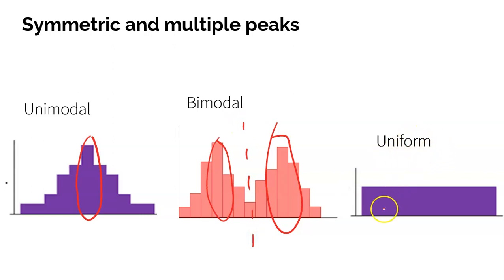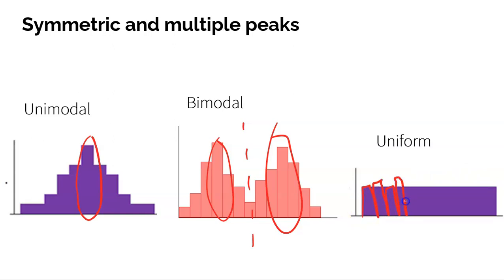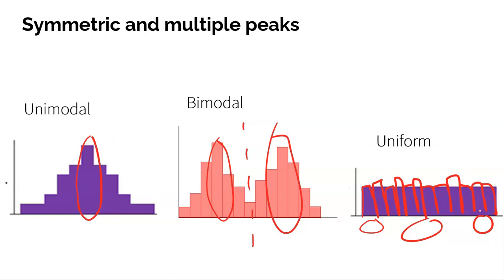This is uniform. If there are no major tails and your data is pretty consistent — it doesn't have to be all exactly the same, but you don't have any major tailing to one side or the other — it doesn't matter if you're looking at low, middle, or high numbers; it's all about the same frequency of data. That's where we would call that uniform.